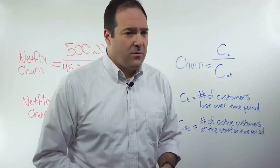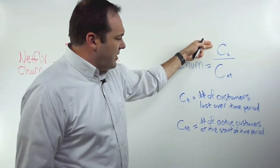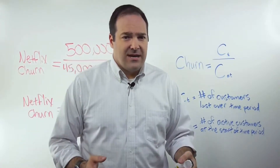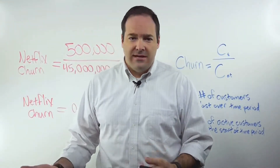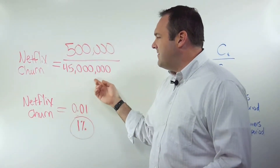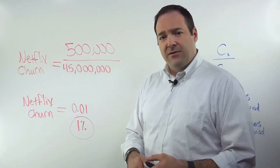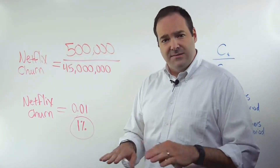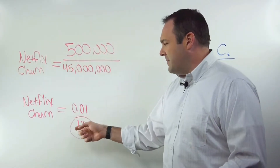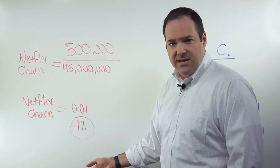The way to figure that out is pretty straightforward. To understand your churn rate, you take the number of customers lost over a time period divided by the number of active customers at the start of that time period. For example, let's look at Netflix. At the beginning of 2016, let's say Netflix had 45 million US subscribers, and then they had a grandfathered-in pricing structure that expired during the middle of that year and they lost half a million subscribers. So doing some quick math on that, the churn rate is 0.01, or 1%.